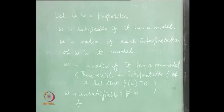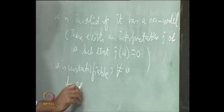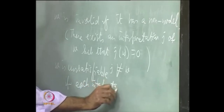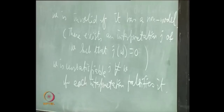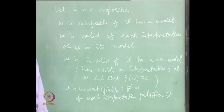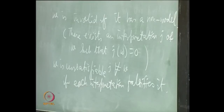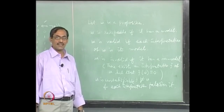It does not have a model. It has a non-model — it does not have a model is different. You say it has a non-model means there is one interpretation which falsifies it. It does not have a model means each interpretation falsifies it. So if each interpretation falsifies it, it is unsatisfiable.